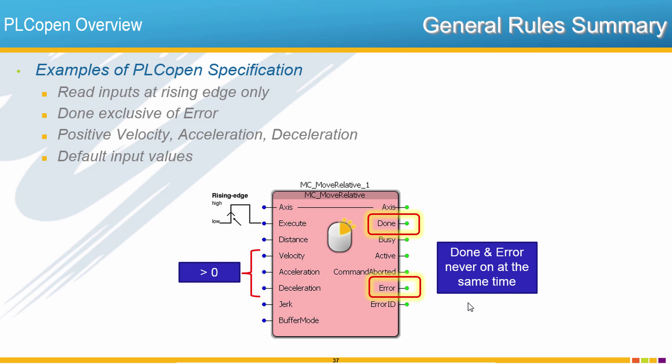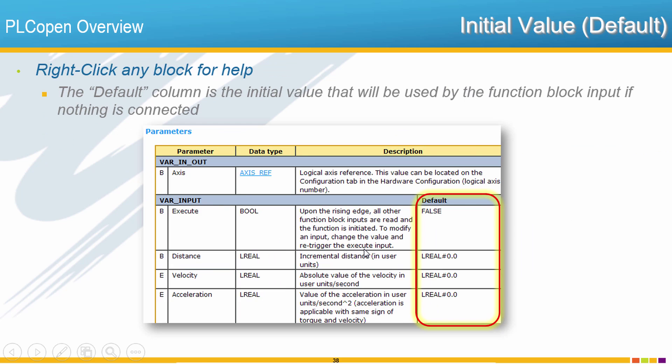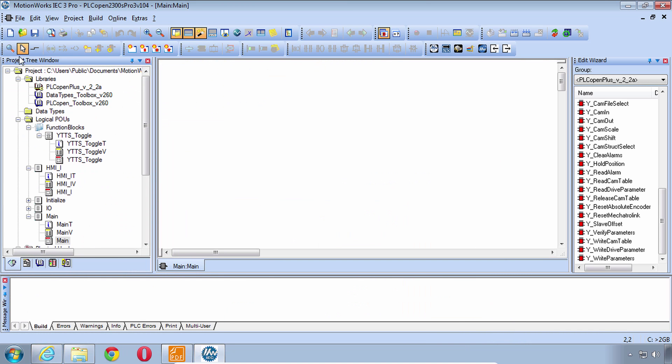Moving down the list here it also says positive velocity acceleration and deceleration. These three values, velocity excel and decel, all must be greater than zero. So while you may think of velocity as being negative in order to go reverse, truly the way that you would do a reverse move is to have a negative distance and velocity must always remain positive. The fourth in the list here is the default input values. PLCopen states that each of these inputs must have a default so that if you don't connect it there is some default data at these inputs to the block. In MotionWorks IEC you can get to this by using the right click and choosing help. If you scroll down you'll be able to find the default value listed for each of our inputs. Let's try this out, let's demonstrate that real quick.